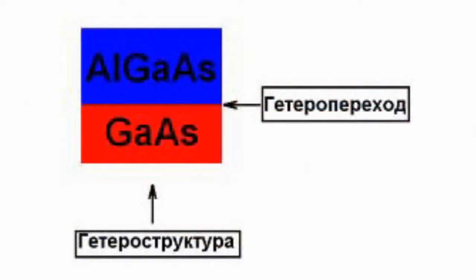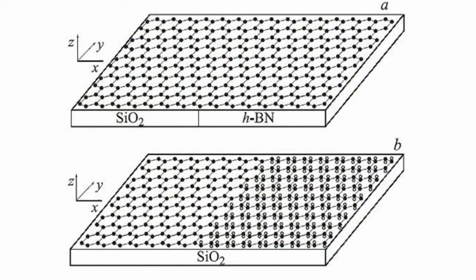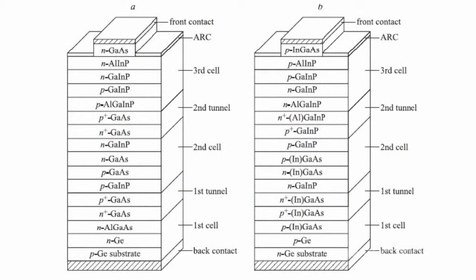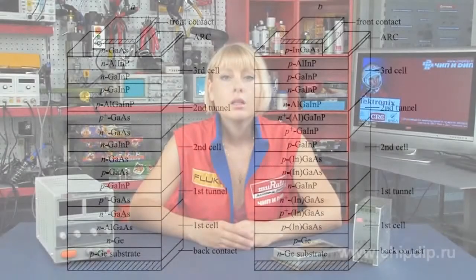A heterostructure is a semiconductor structure with several contacts of two semiconductors different in chemical composition. The structure is grown out of different semiconductors, generally differing by prohibited zone gap. A heterojunction forms between two different materials. It can have increased concentration of carriers. Unlike a homostructure, it has more flexibility in designing the necessary potential profile of conduction and valence zones.